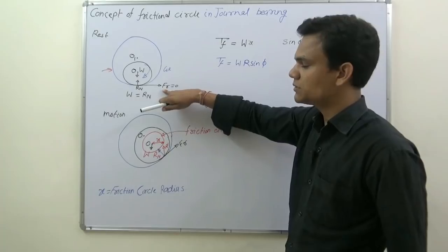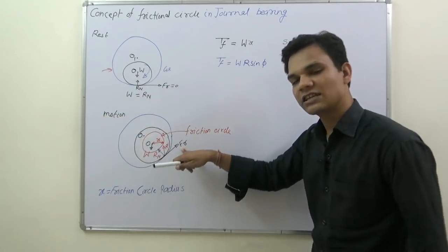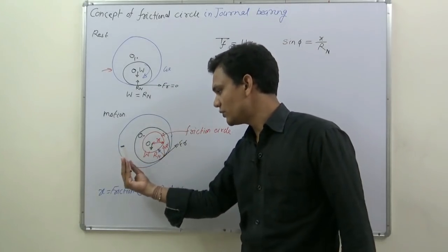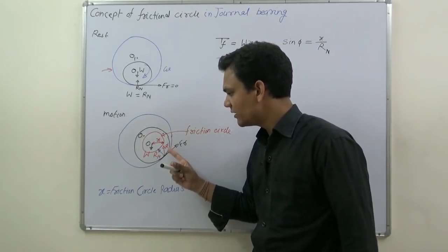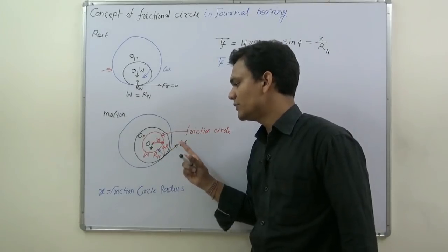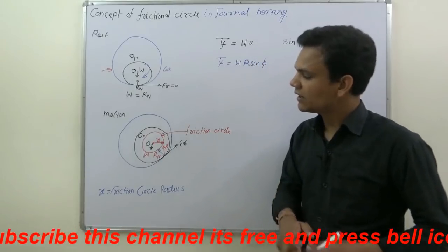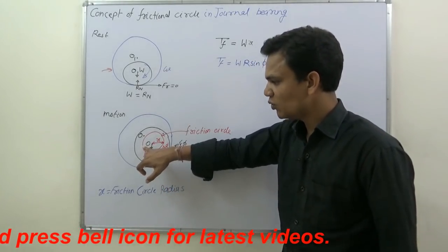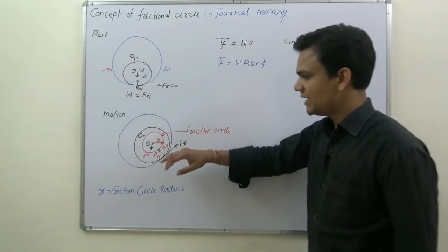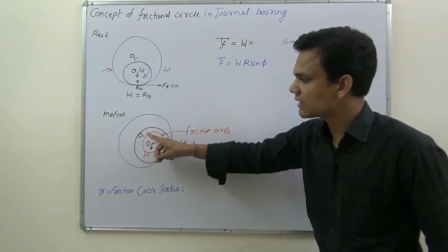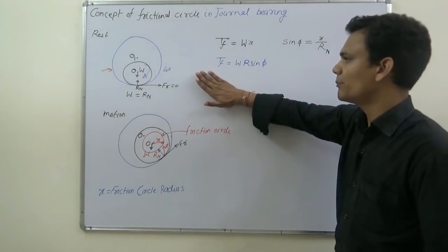When the shaft is stationary, the line of action of the load and the normal reaction are the same and friction force is zero. When motion starts, friction comes into the picture, the shaft shifts slightly, and the line of action of normal reaction changes. We get R-dash, the resultant of normal reaction and friction force. The distance of R-dash from center O is the friction circle radius x. With x as the radius, we draw the friction circle.